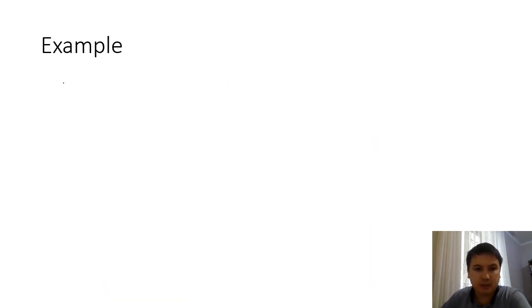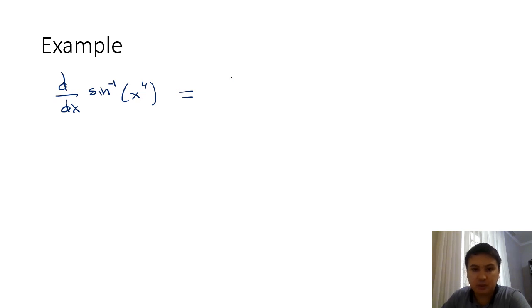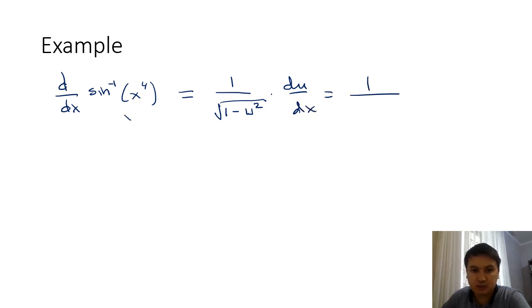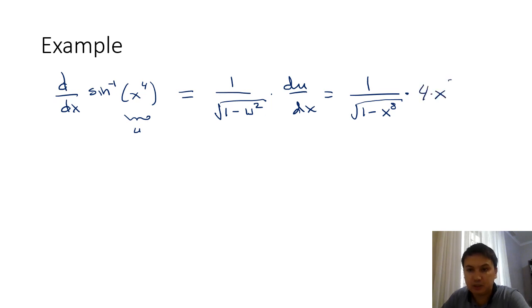Let's do an example. Find the derivative of arcsin(x⁴). Let u = x⁴. Applying the formula, this is 1 over √(1 − u²) times du/dx, which gives 1 over √(1 − x⁸) times 4x³.